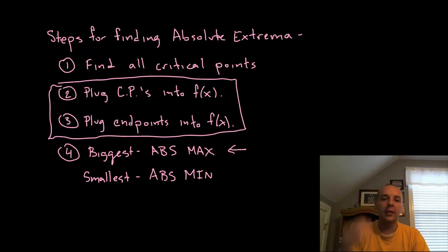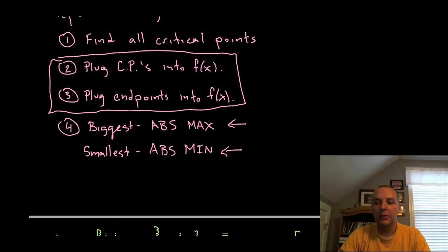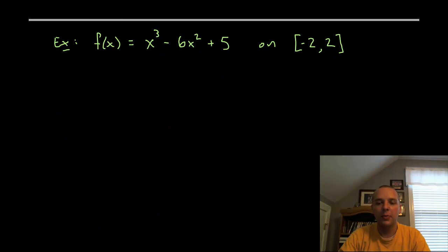And just looking at the y values for each of these you'll know which one's the biggest out of that little pack. And the smallest number or the most negative if there are any negatives will be your absolute minimum. So that's how we find our absolute extrema.